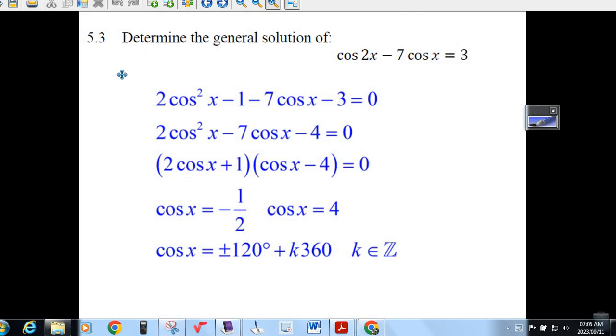Okay, let's try a couple of the trig questions. 5.3, determine the general solution of cos 2x minus 7 cos x equals 3.